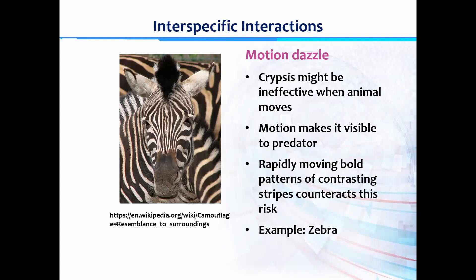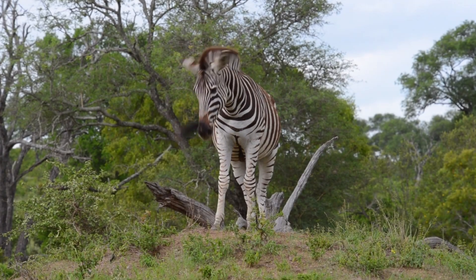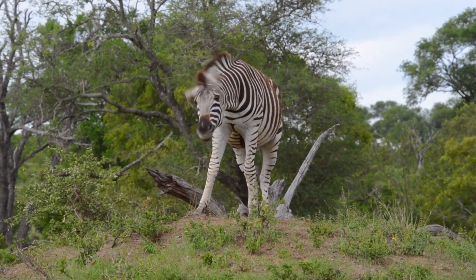In motion dazzle, animals have rapidly moving bold patterns of contrasting stripes which counteract the risk of being captured by a predator. The zebra is a very common example of motion dazzle.